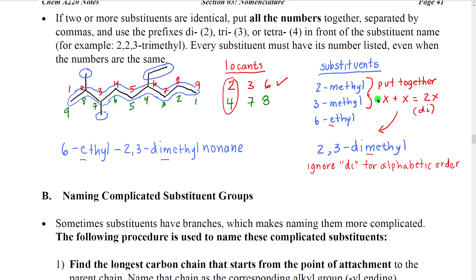I often use the analogy of algebra when we collect terms. If I have two methyl plus three methyl, I can collect those together just like 2x - I can say I have 2,3-dimethyl. The interesting thing is that the 'di' prefix is going to be ignored for alphabetical order, so we alphabetize dimethyl as M. Ethyl will be alphabetized as E, so it comes first: 6-ethyl-2,3-dimethyl and then our parent chain name, nonane.